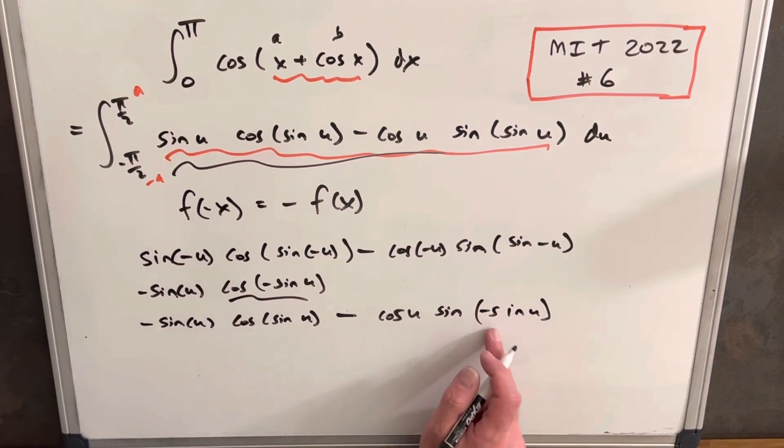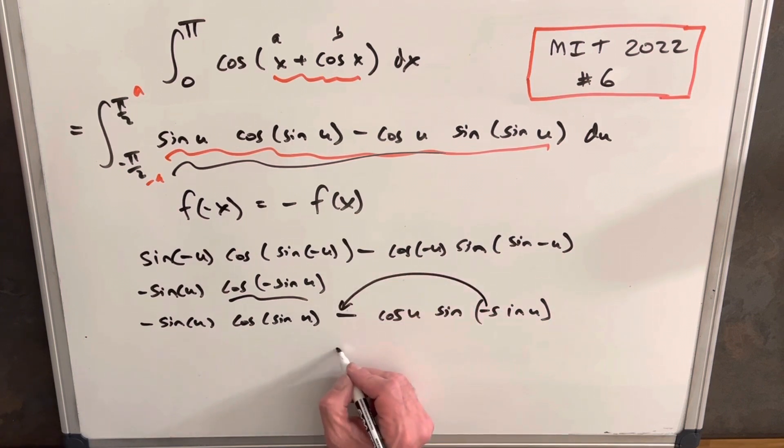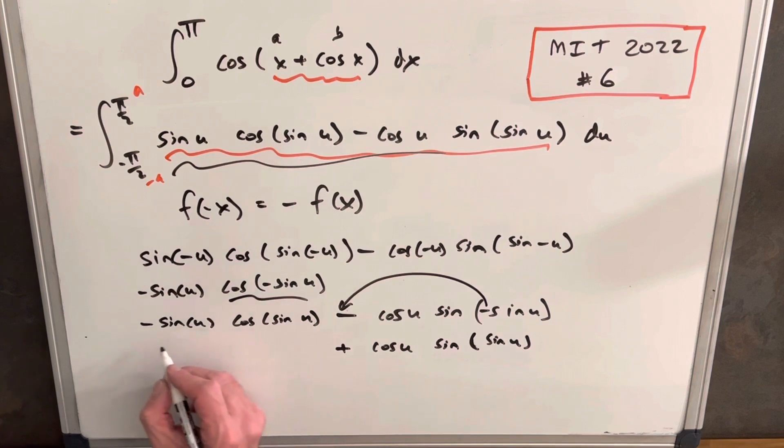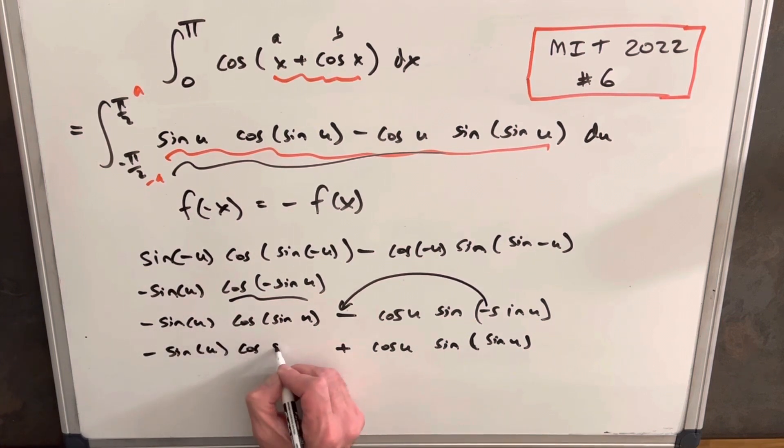But again, this is within another sine, which is an odd function. Sorry if this is confusing. But so then we can essentially bring this minus sine all the way out here. And we have a plus cosine u, sine of sine u. And then here we have minus sine u, cosine u.